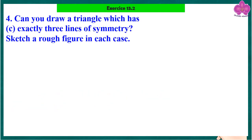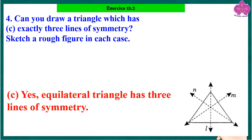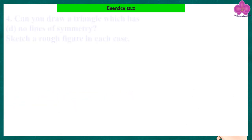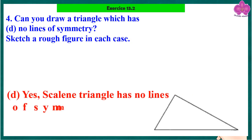Can you draw a triangle that has exactly three lines of symmetry? Yes — an equilateral triangle has three lines of symmetry. Can you draw a triangle that has no lines of symmetry? Yes — a scalene triangle has no lines of symmetry.